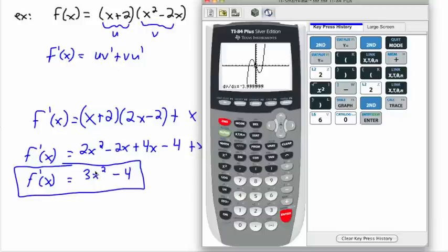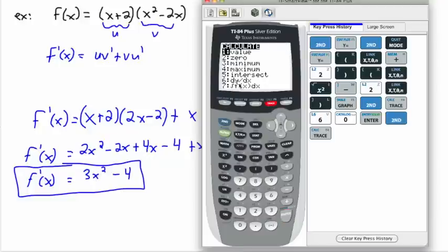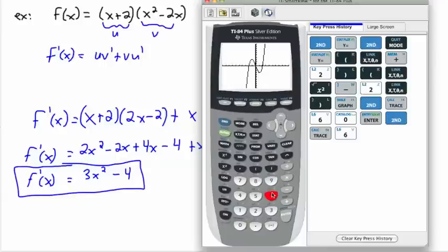Now you could say what if I put in 1 here. Well let's see. At x equals 1, according to my equation, 1 squared is just 1, 1 times 3 is 3, 3 minus 4 is negative 1. So if I put in x equals 1, I'd better get an answer for my derivative of negative 1. Let's see if that works. So second calc. And I go back to dy dx. I'm going to set x equals 1. And I get negative 1. So that's great. So I know that this works.